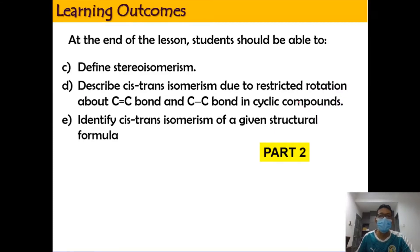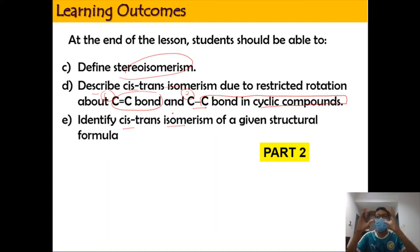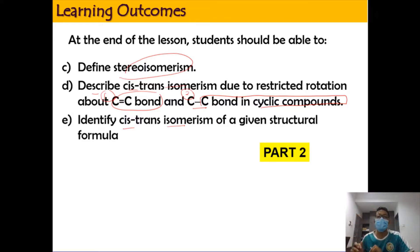In this video, we're going to look into the definition of stereoisomerism. We also have to describe the cis-trans isomerism due to the restricted rotation about the carbon-carbon double bond and the carbon-carbon single bond in cyclic compounds. For Part E, we're going to identify the cis or trans isomer based on a given structural formula.